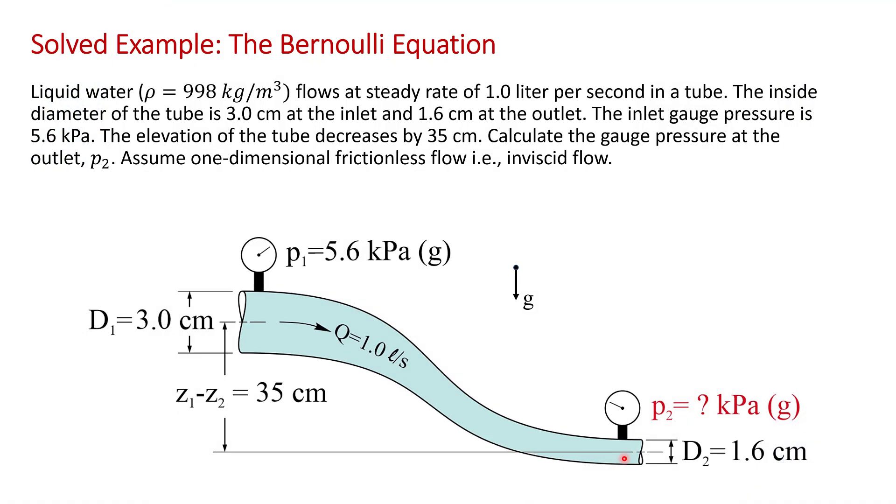Here's the problem statement. Liquid water at room temperature, so a density of 998 kilograms per cubic meter, flows at a steady flow rate of one liter per second in a tube. The inside diameter of the tube is 3 centimeters at the inlet,